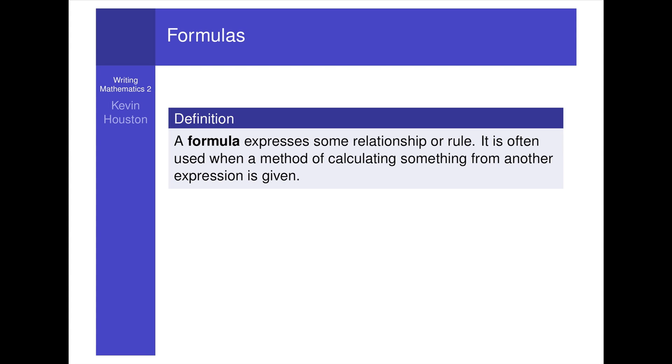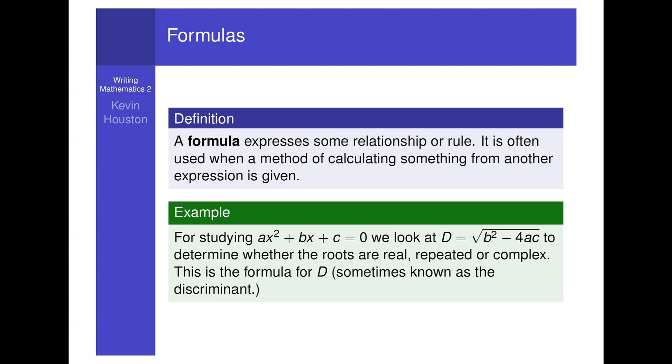Definition. A formula expresses some relationship or rule. It is often used when a method of calculating something from another expression is given. For example, for studying ax squared plus bx plus c equals 0, we look at D equals square root of b squared minus 4ac to determine whether the roots are real, repeated or complex. This is the formula for D, sometimes known as the discriminant.